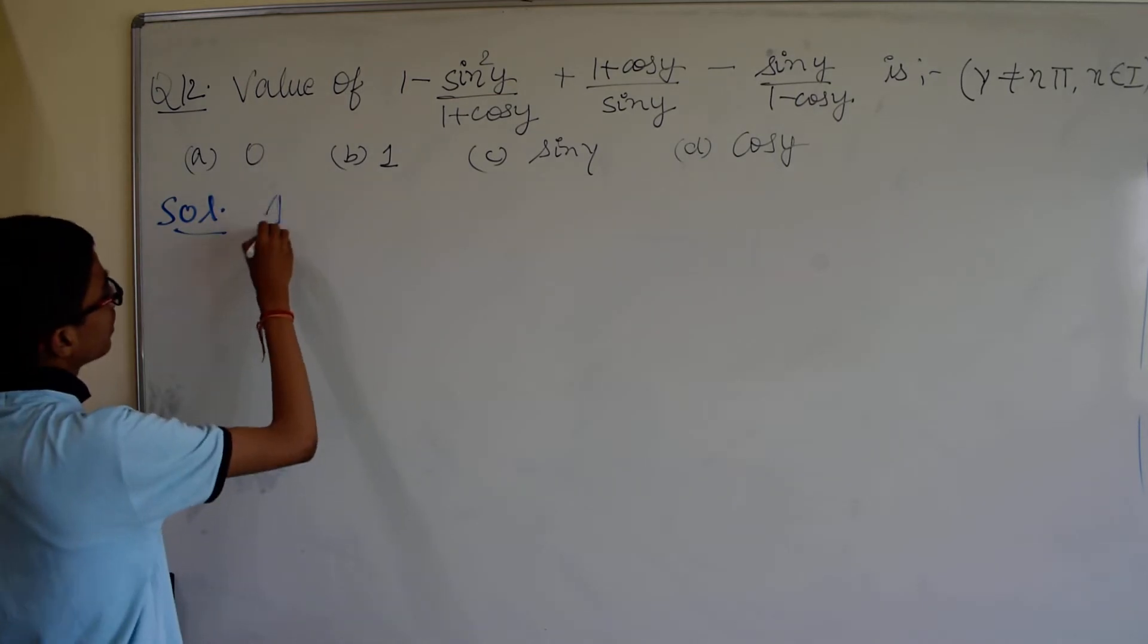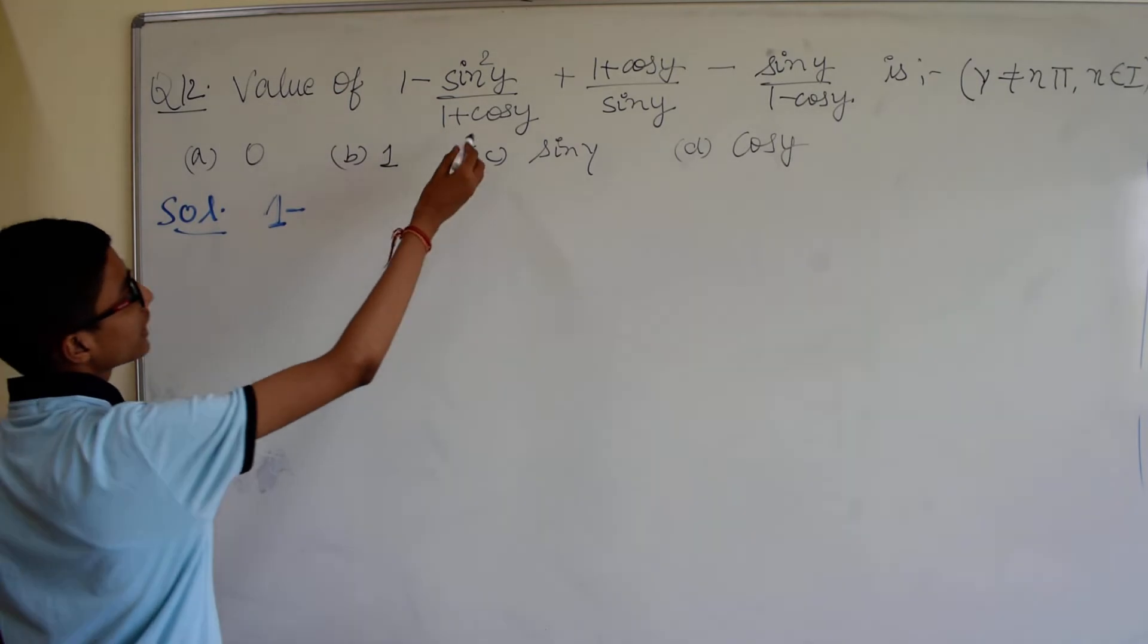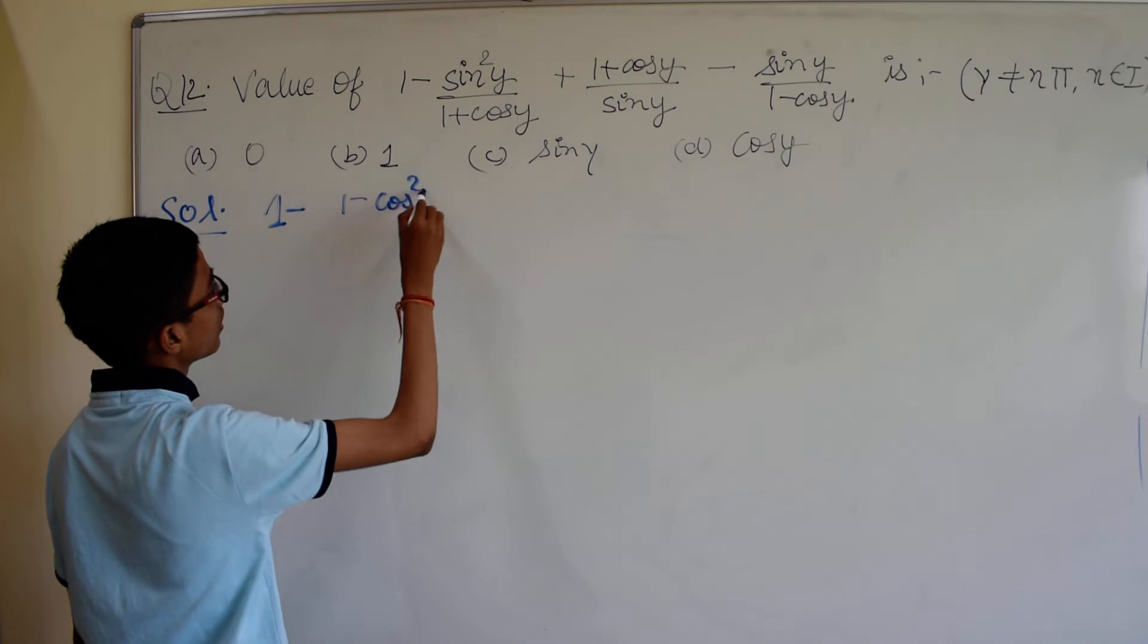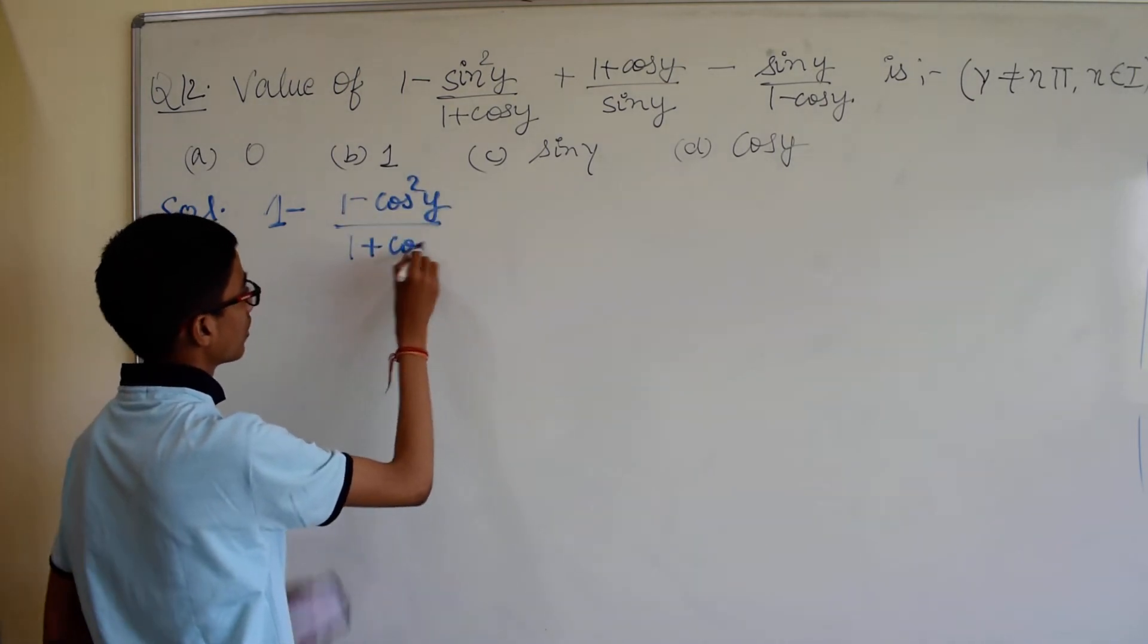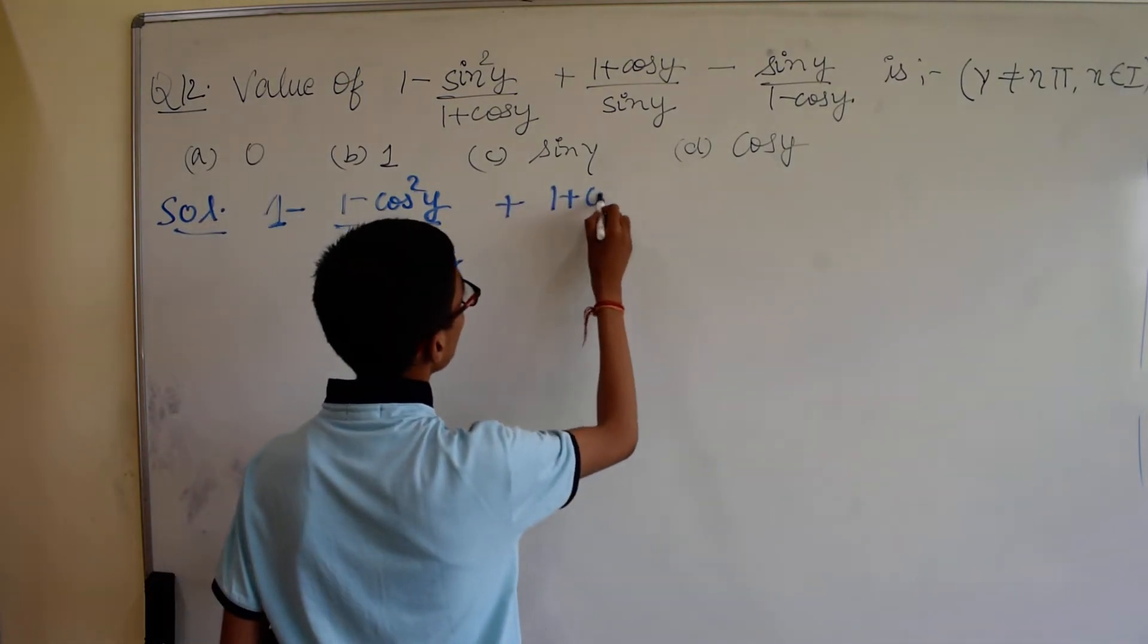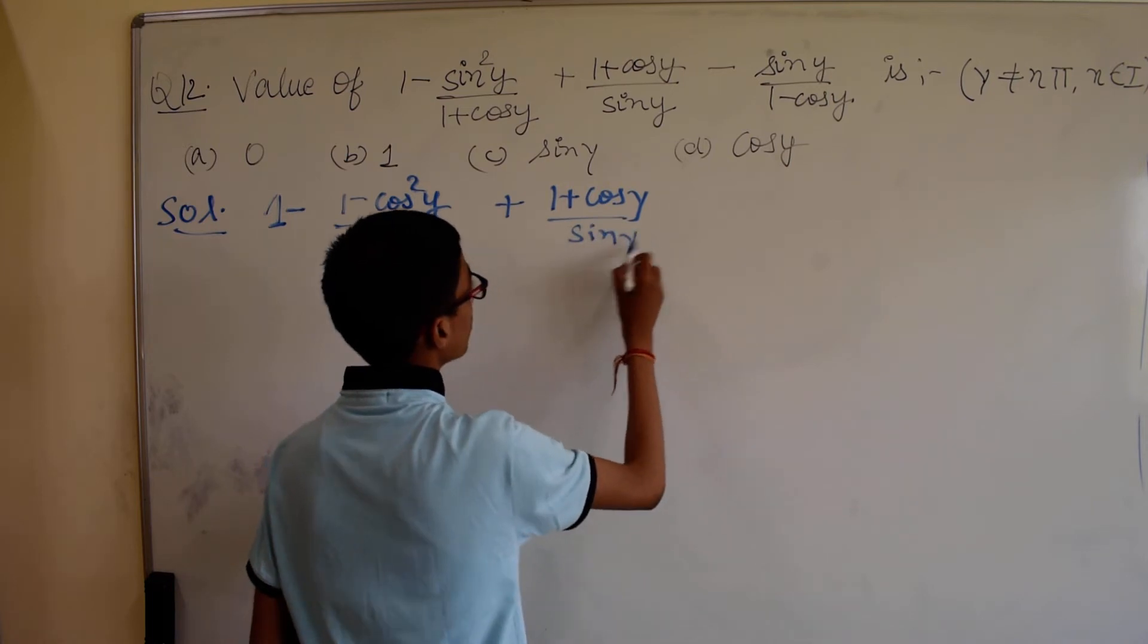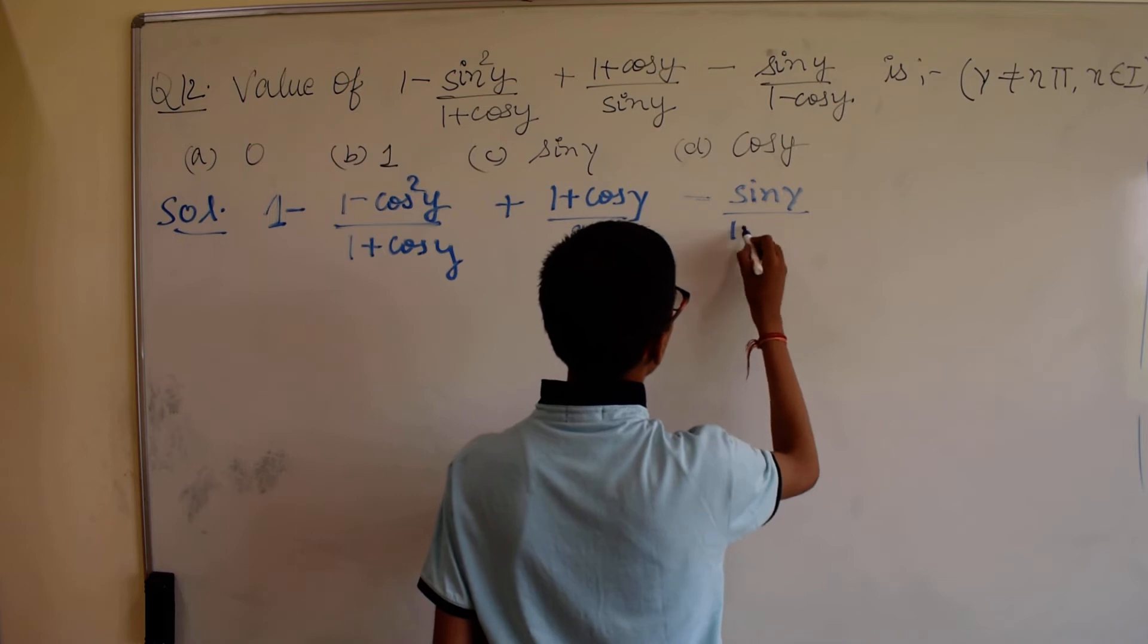First one as it is sin squared y, sin squared y to 1 minus cos squared y. So you can get a decrement, a factor cancel over here. So 1 minus cos squared y upon 1 plus cos y plus squared y divided by sin y minus sin y, 1 minus cos y.